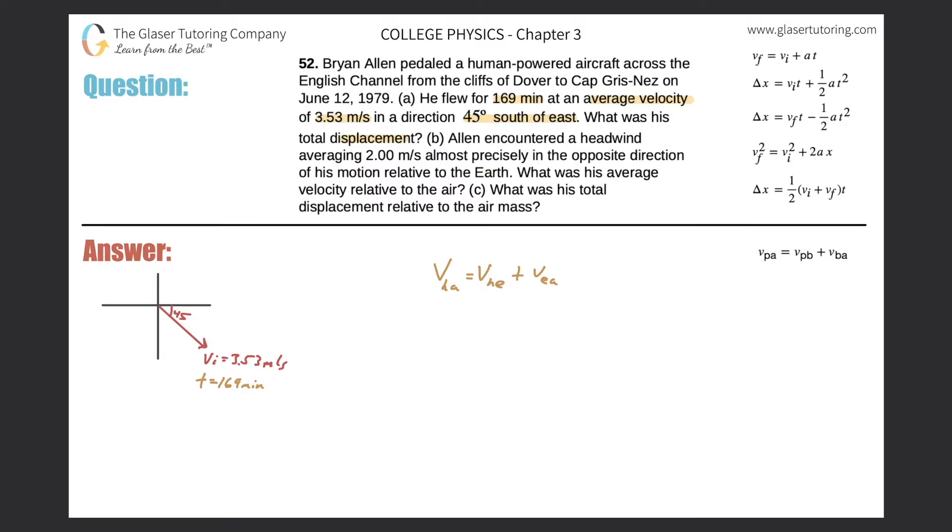Alright, so fairly straightforward. Here's the picture. Here's the east direction. Here's the south, and he's flying at an angle 45 degrees south of east. So that's depicted in the picture.